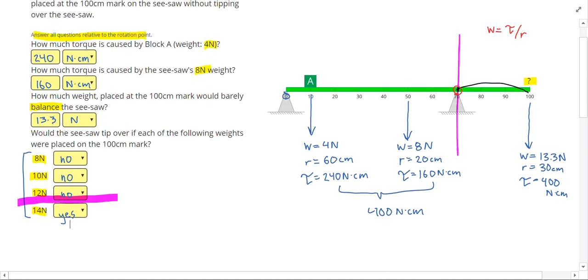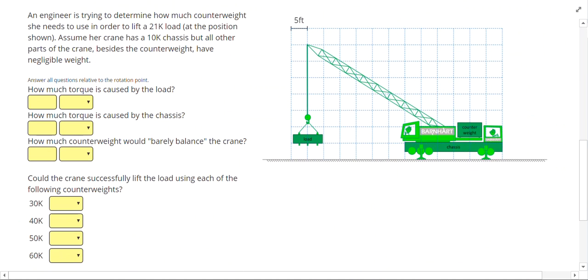Let's take a look at a similar problem, but this one involves a crane. In this problem an engineer is trying to determine how much counterweight she needs to use in order to lift a 21 kip load at the position shown. Assume her crane has a 10 kip chassis, but all other parts of the crane besides the counterweight have negligible weight. The substantial parts of the crane are shown in dark green, and I'm going to draw a weight down at the center of each one.